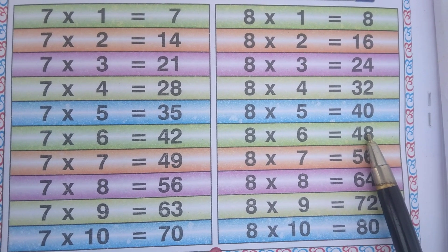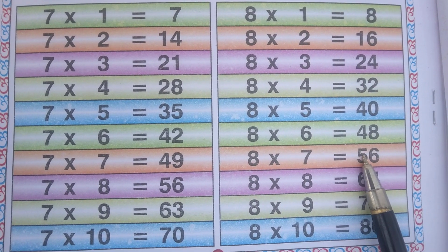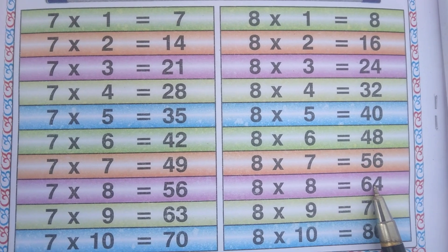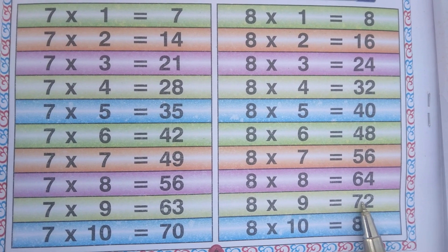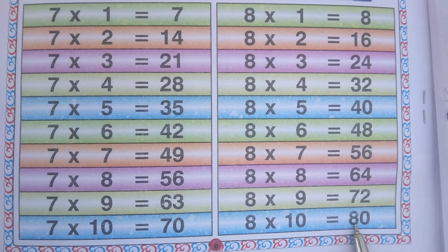8 6s are 48, 8 7s are 56, 8 8s are 64, 8 9s are 72, 8 10s are 80.